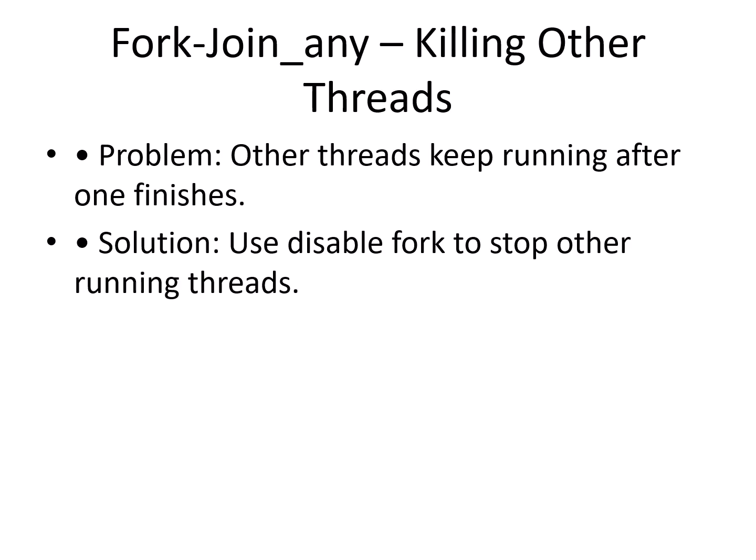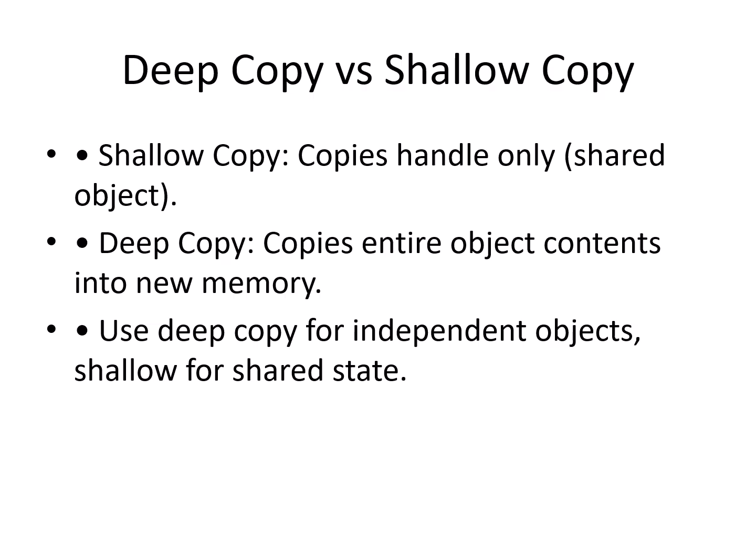Now, coming to deep copy versus shallow copy. I was asked about deep copy and shallow copy. I explained that a shallow copy only copies the handle, so both objects point to the same memory. A deep copy creates a complete independent object with its own data. In verification, we often use deep copy for transactions to avoid data corruption.